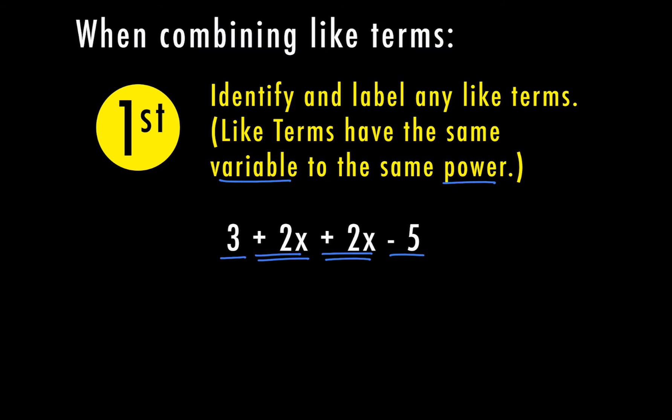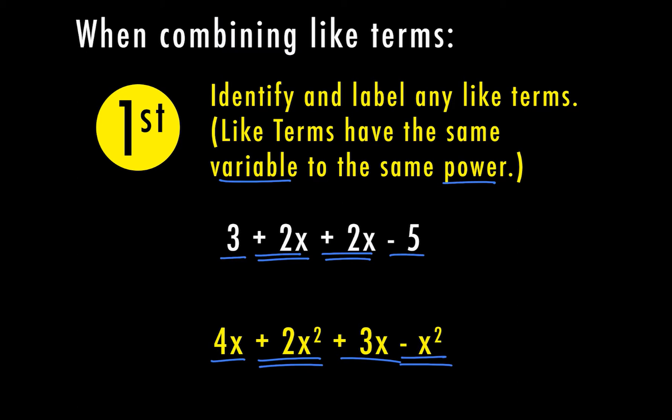Now I have 4x plus 2x squared plus 3x minus x squared. We're going to be able to combine first my 4x and my 3x because those both have just an x with no exponent. Then I can combine my 2x squared and my negative x squared because those have both the variable x to the power of 2 — x squared — so those are matching.